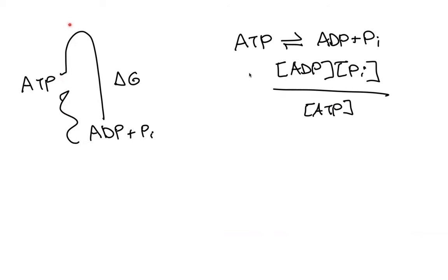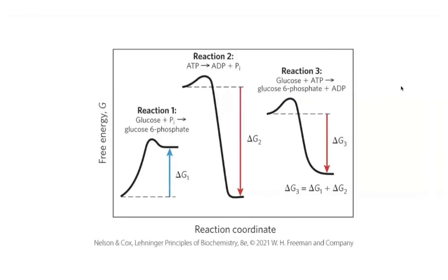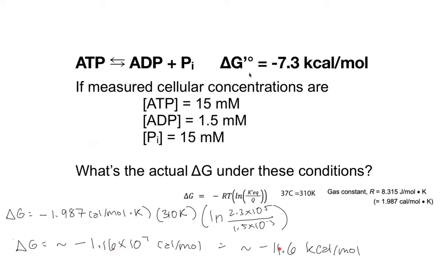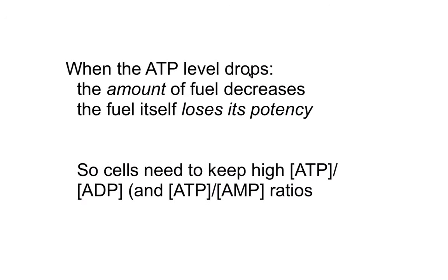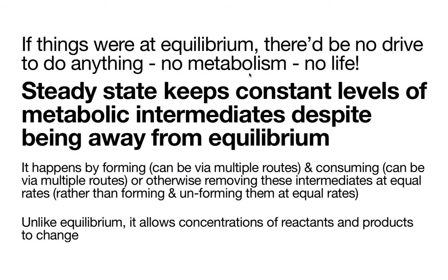We're pushing towards our products, and once they're down here in the products it's not easy to go in reverse. We've given off a very large delta G — a lot of free energy to power other things. The actual free energy change in our cells is closer to −11.6 kcal/mol, thanks to the concentrations being skewed so we have this high ATP-ADP ratio. We need to conserve that ratio in order to conserve the power of our fuel.